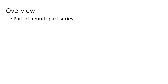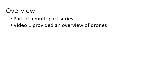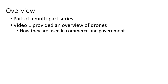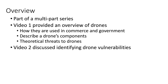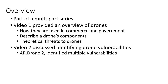This is the third in a multi-part series of videos dealing with small unmanned aerial systems, or as I'm going to call them, drones. The first video provided an overview of what drones are and their purposes — for example, how they are used in commerce and government, a description of drone components, and theoretical threats to drones. In the second video we discussed identifying drone vulnerabilities, in particular for an AR Drone 2 made by Parrot, a French company.